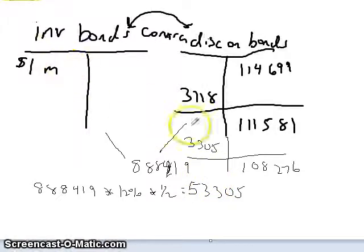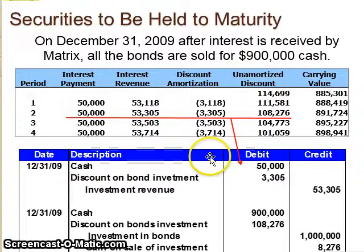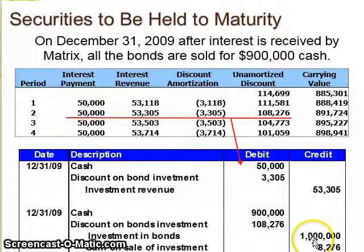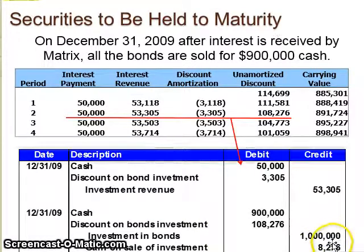So we've got a $1,000,000 bond investment and $108,276 in unamortized bond discount. In our example, we're going to sell this bond for $900,000 cash. Cash is debited for $900,000. We take the investment in bonds off the books for $1,000,000 credit. We take the discount on bond investment off the books for $108,276 debit. Our gain on the sale of investment is $8,276 — because the book value was just under $900,000, selling at $900,000 produces that gain.